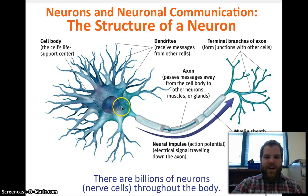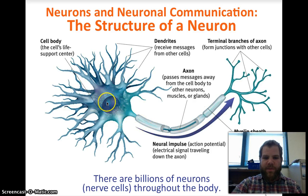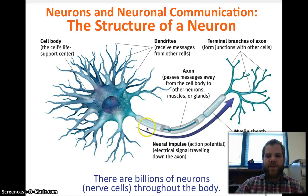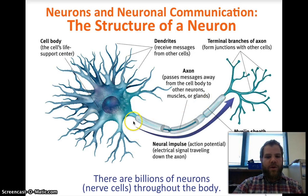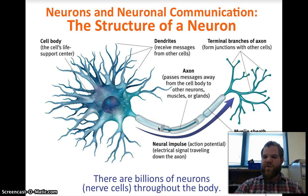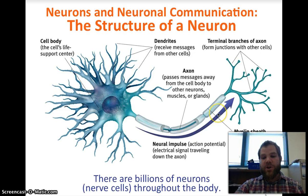When the neuron wants to send a message out, it goes through this sausage-looking thing called the axon. The axon passes messages away from the cell body to other neurons, muscles, or glands. What's sent over it is called the neural impulse or the action potential — the signal traveling down the axon. Using the sausage metaphor, the axon is the meat and the myelin sheath is the sausage casing; it covers the axon of some neurons and helps speed the neural impulses.